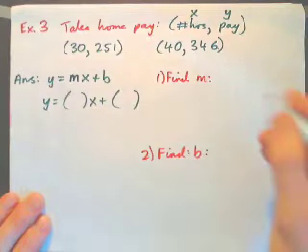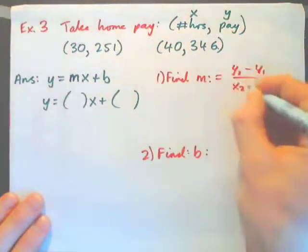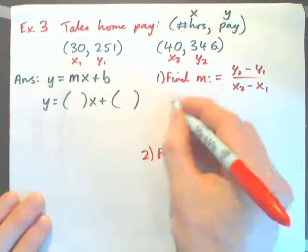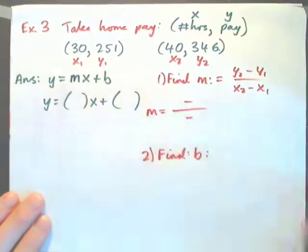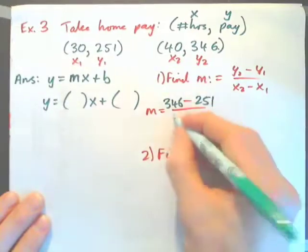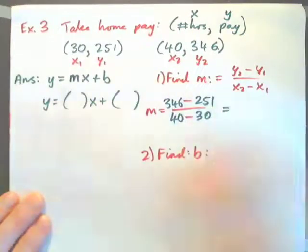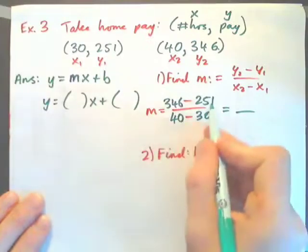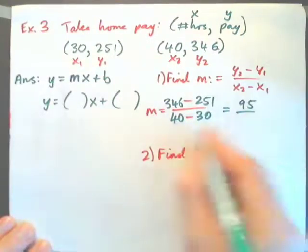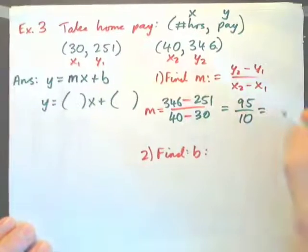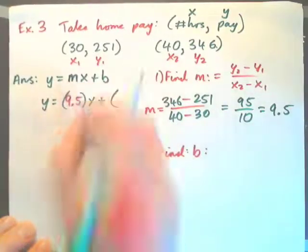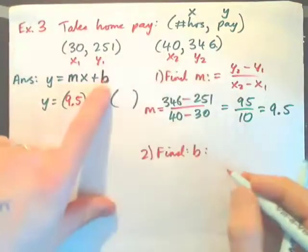To find m: m equals y2 minus y1 over x2 minus x1. The first point is x1=30, y1=251; the second point is x2=40, y2=346. Plugging in: 346 minus 251 is 95, and 40 minus 30 is 10. The slope is 95 over 10, which is 9.5. So right away I have part of my answer: the slope is 9.5.